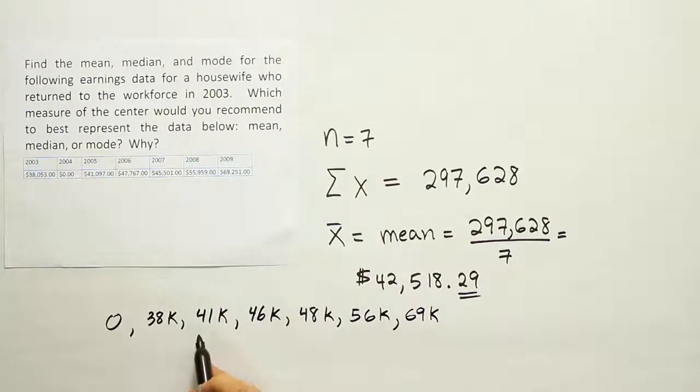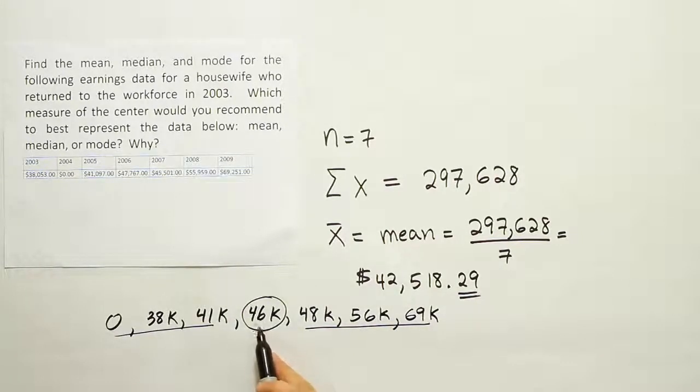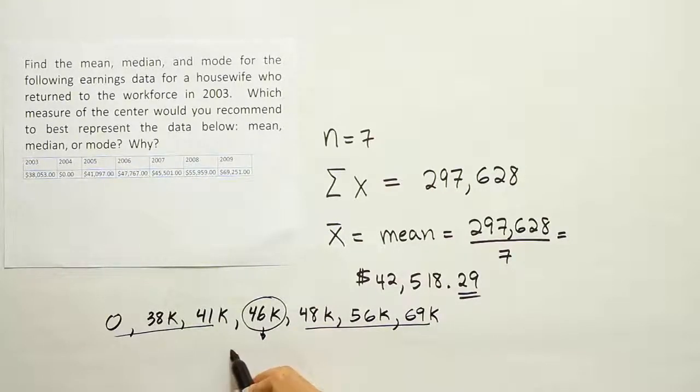The number in the middle is 46K - there's three numbers to the left, three numbers to the right. The number smack in the middle is 46, which represents the actual value of $45,501. So that is our median. Now we have the median and we have the mean.